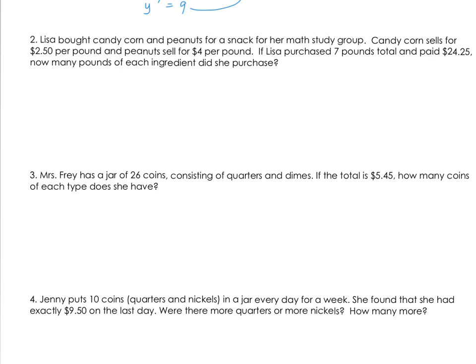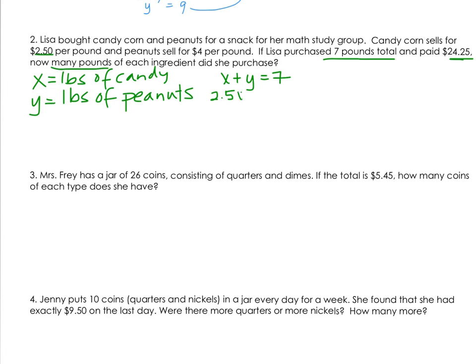We need to create our system with two equations. The last sentence said if Lisa purchased 7 pounds total. That means the two types of ingredients together have to equal 7, which means x plus y equals 7. We know that she paid $24.25 total. Now we have to look at the breakdown for each type of ingredient. It's $2.50 per pound for candy, I'm going to abbreviate that as 2.5. If we take 2.5 times x, that would be the total cost spent on the candy corn. Peanuts are more expensive at $4 per pound. If we take 4 times y, that would be the total cost for peanuts, equals the total that we spend, $24.25.